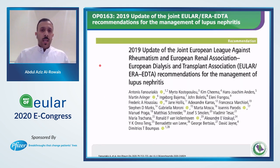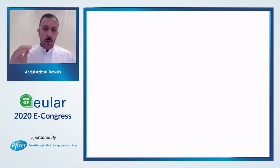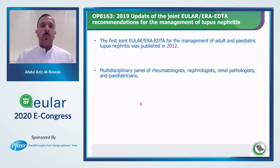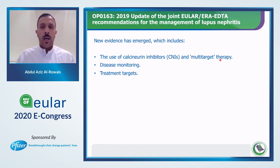Now the 2019 update of the EULAR recommendation guidelines for management of lupus nephritis. The first recommendations were published in 2015 by a multidisciplinary panel of rheumatologists, nephrologists, renal pathologists, and pediatricians. Over the last seven years, new evidence emerged including use of calcineurin inhibitors and multi-target therapy, advances in disease monitoring and treatment targets — hence the update.